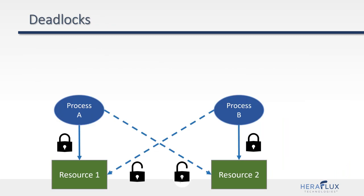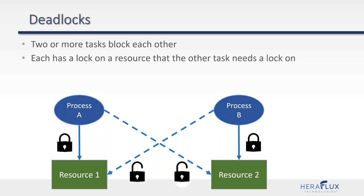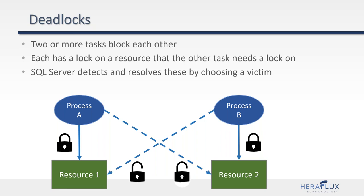Deadlocks occur when two or more tasks are blocking each other — each has acquired some resource and is trying to acquire a different one and cannot. Process A has a lock on resource 1, Process B has a lock on resource 2, and each is trying to acquire the other's resource. SQL Server can detect and resolve deadlocks by choosing a victim — typically whichever process has accomplished the least — rolling it back, releasing its locks, and allowing the other processes to continue.